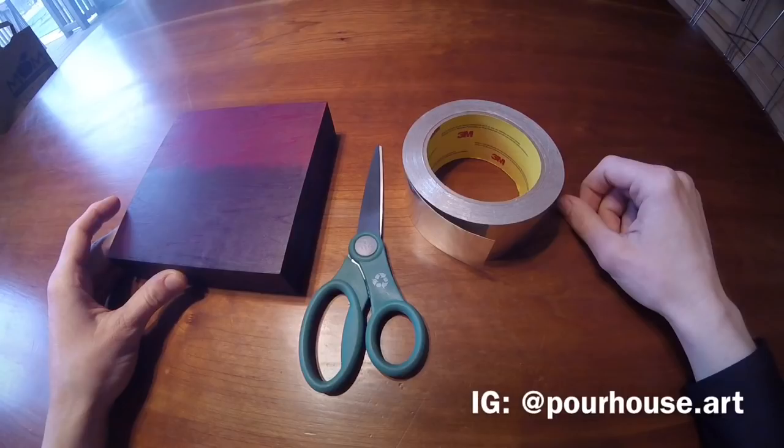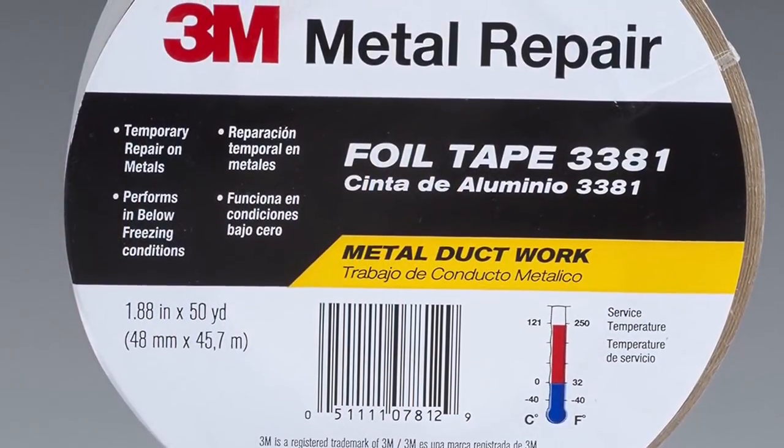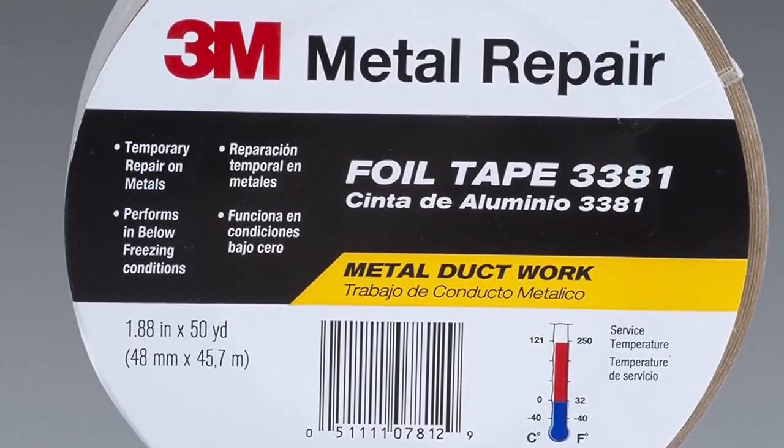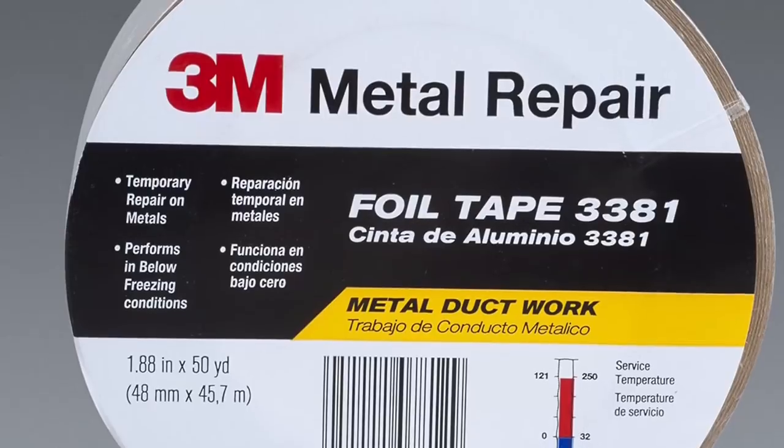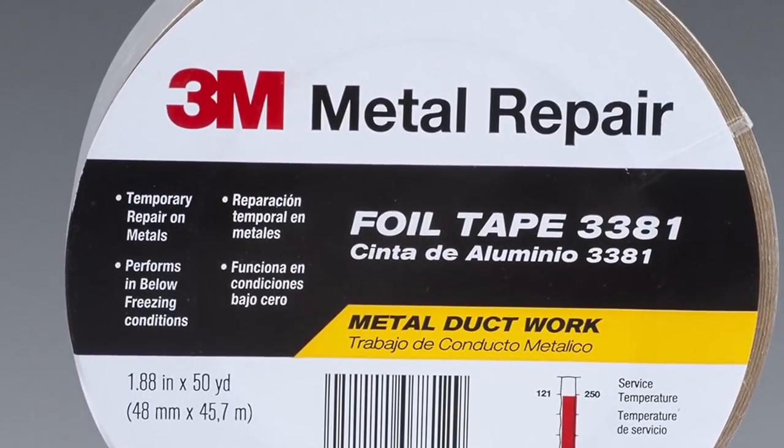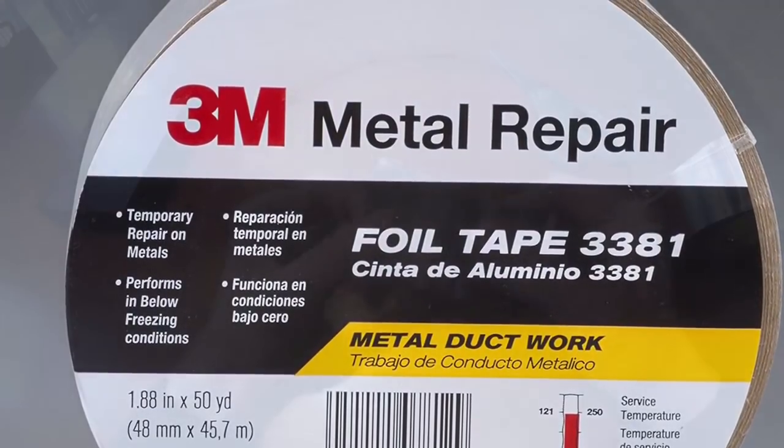The materials you're going to need for this are your wood panel, I do not suggest using a canvas for this, scissors, and the aluminum foil or metal siding tape as it's sometimes called. Here's the tape that I use, it's by 3M and I found it at Lowe's, I'm sure you can find it at Home Depot, your local hardware store, or Amazon.